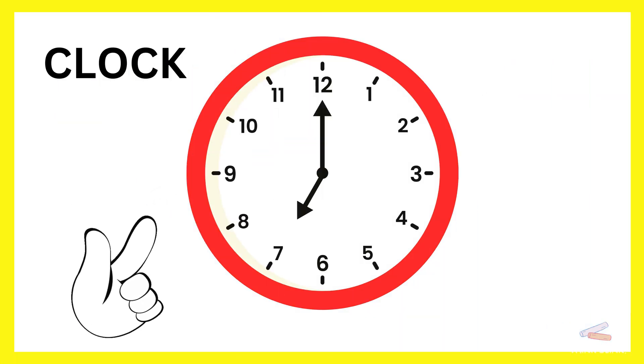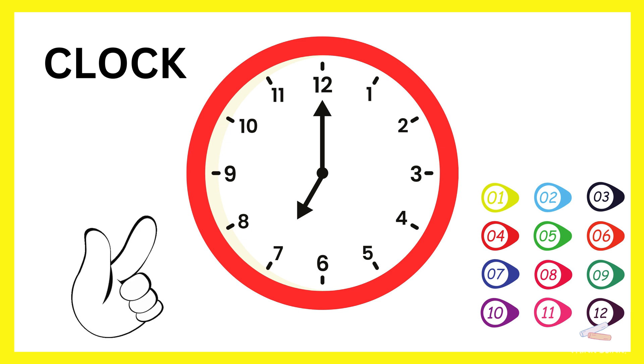This is a clock. It tells us what time it is. A clock has numbers from 1 to 12. The hour hand shows the hours. And the minute hand shows the minutes.